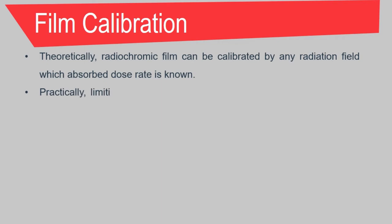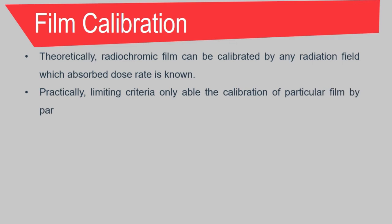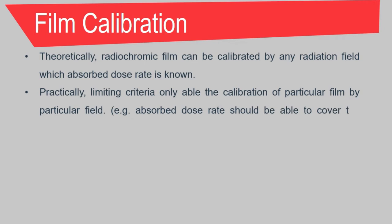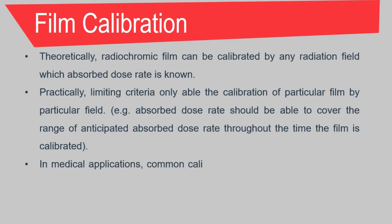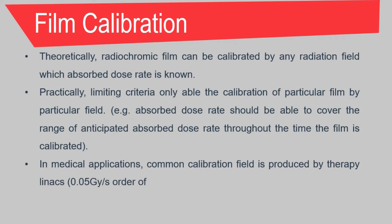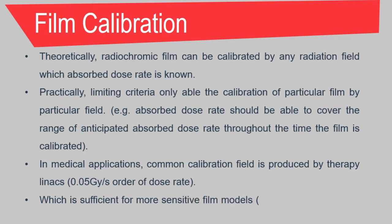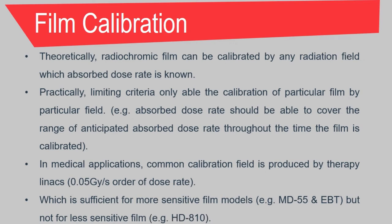In film calibration, theoretically, radiochromic film can be calibrated by any radiation field for which the dose is known. However, practically, limiting criteria only allow calibration of a particular film by a particular field. For example, the absorbed dose should cover the range of anticipated absorbed dose throughout the time the film is calibrated. In medical applications, the common calibration field is produced by a therapy linac, with the order of dose being 0.05 Gy per second. This dose level is sufficient for more sensitive film models such as MD-55 and EBT, but not for less sensitive films such as HD-810.